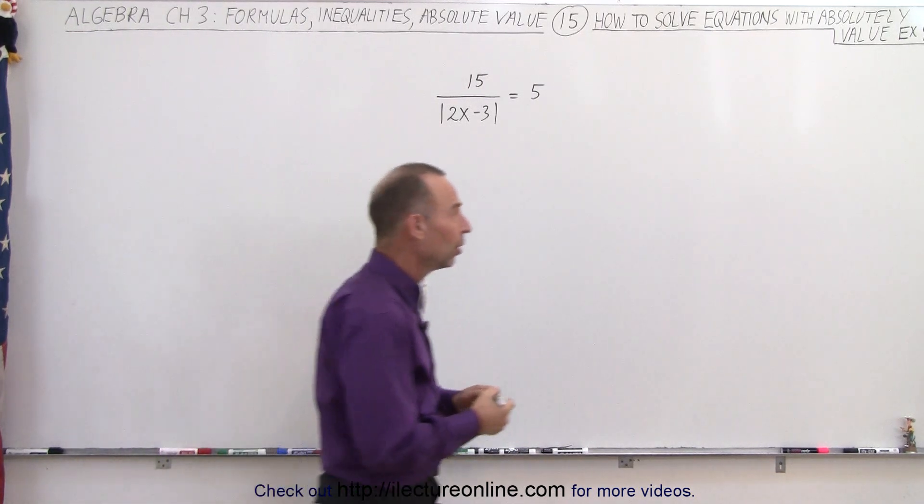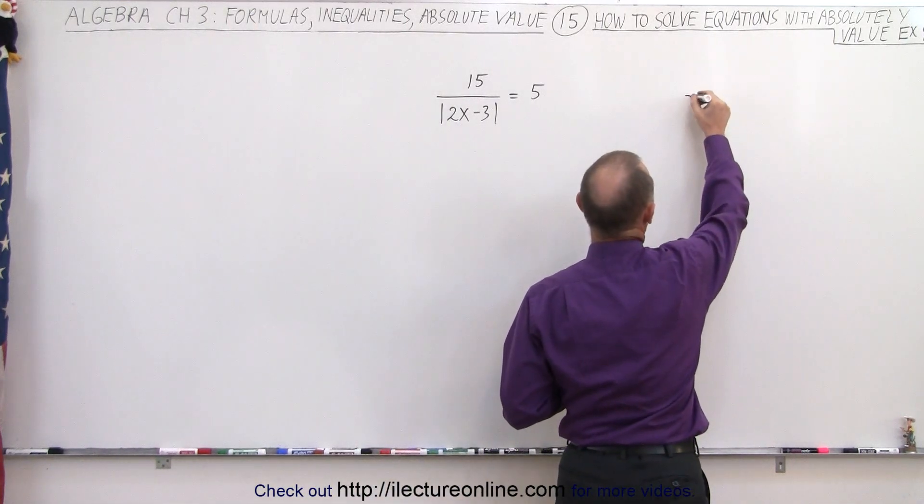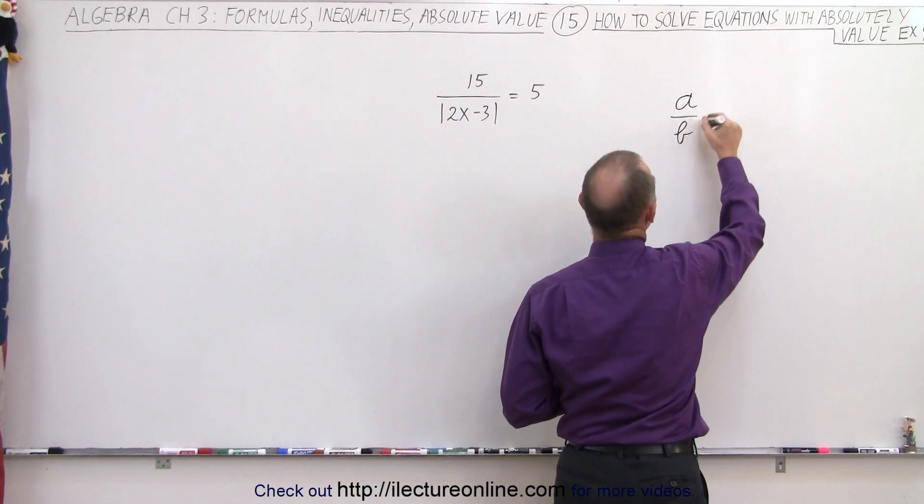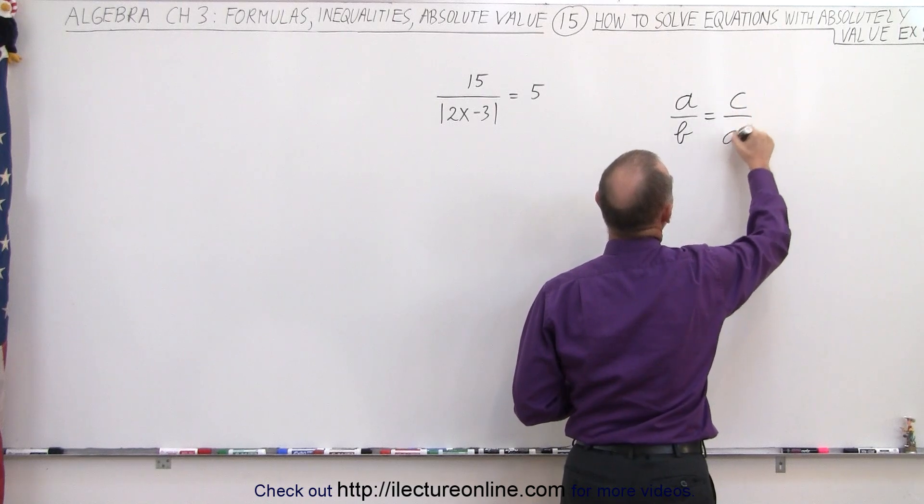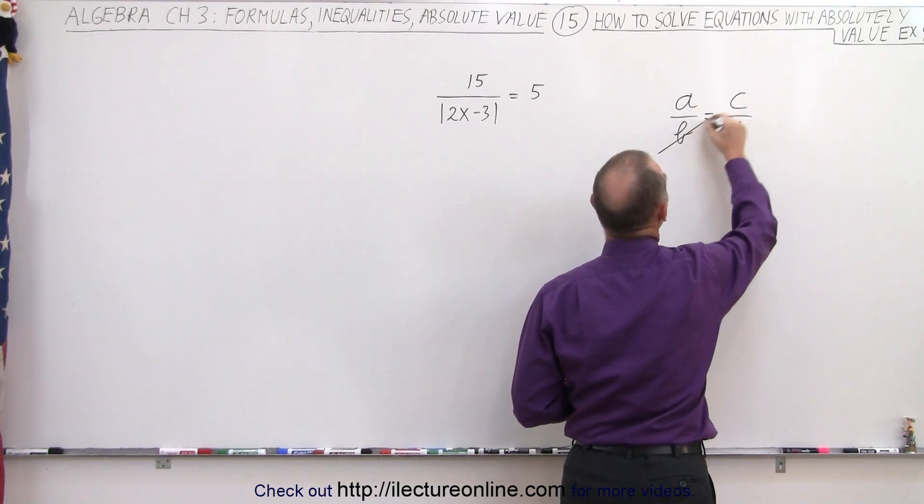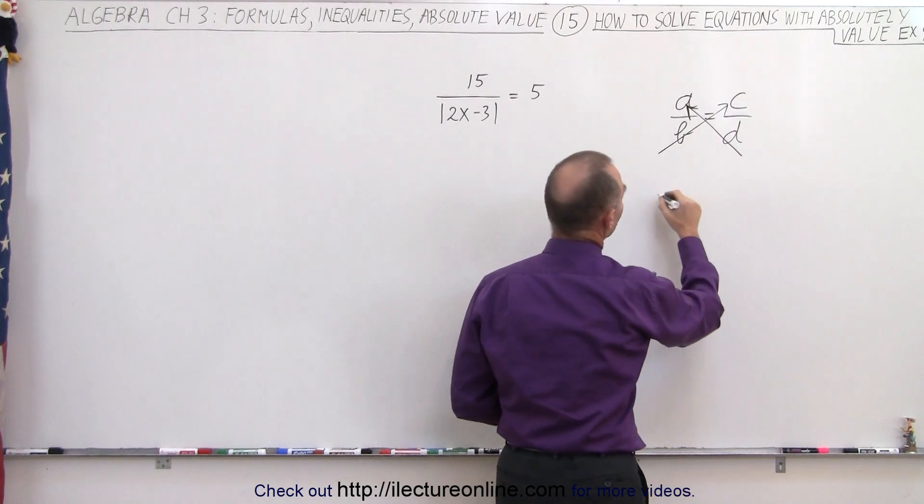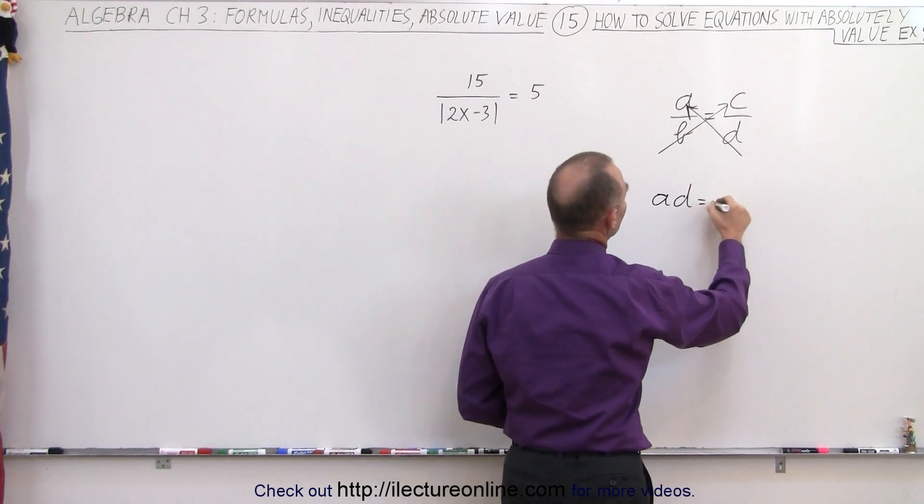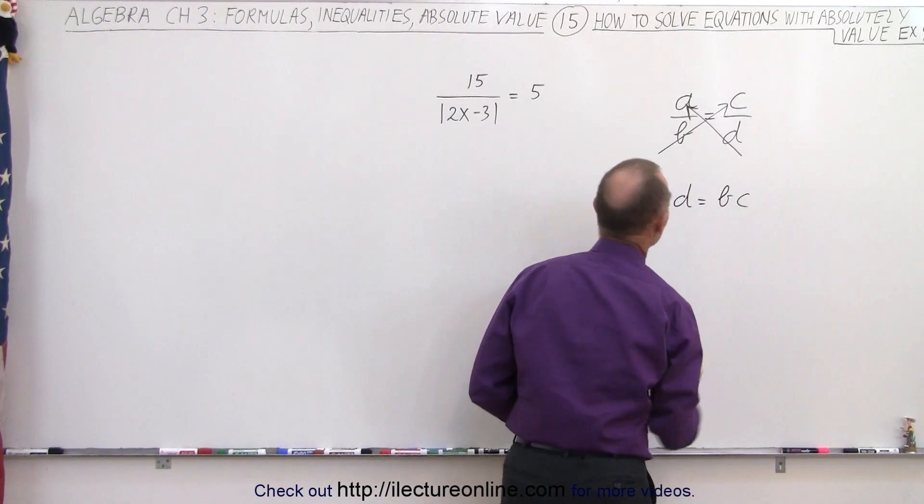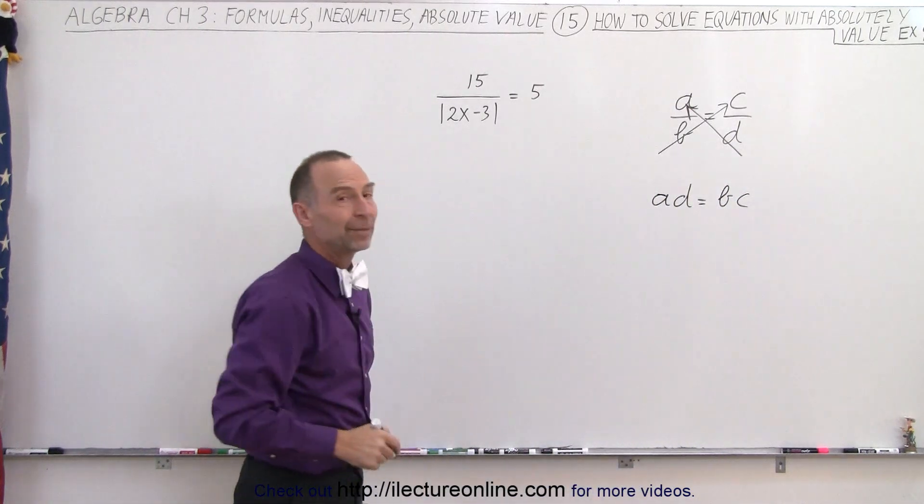But then we have to realize, whenever we have something that looks like this, a over b equals c over d, we can move anything along the diagonal. In other words, we can write that a times d is equal to b times c. So we're going to employ the same technique here.